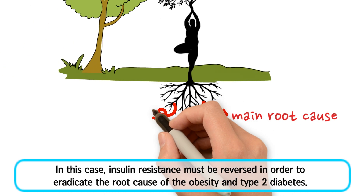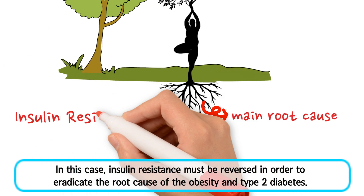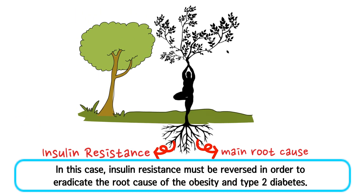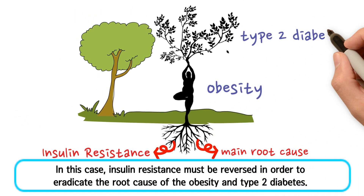Therefore, you should make sure to eradicate the main root cause in order to prevent the same things from happening again and again. In this case, insulin resistance must be reversed in order to eradicate the root cause of obesity and type 2 diabetes.